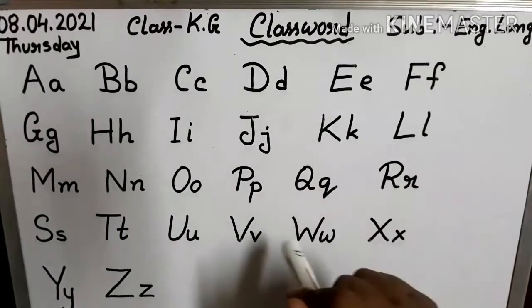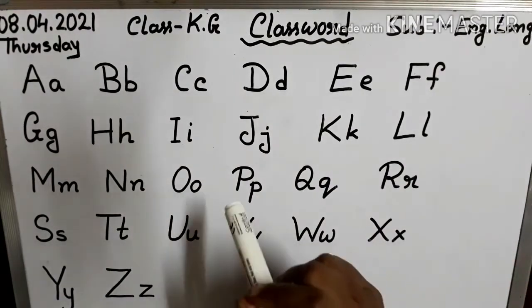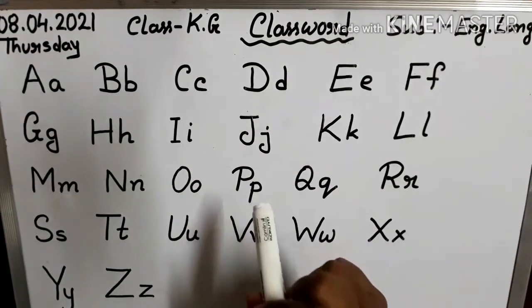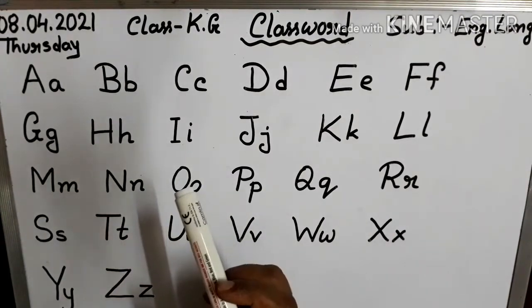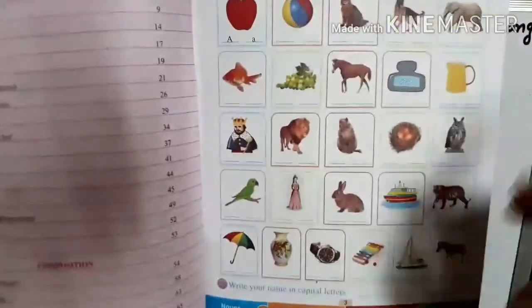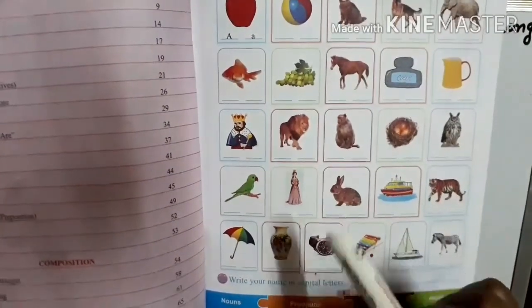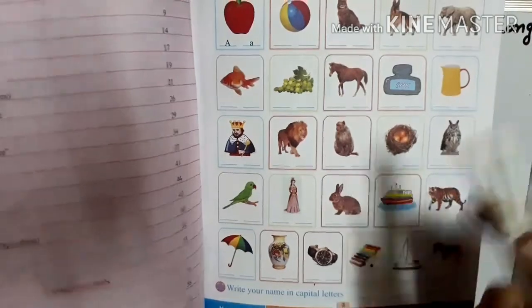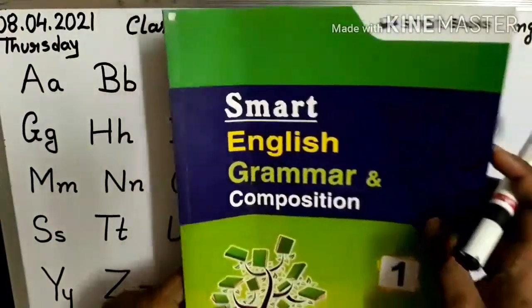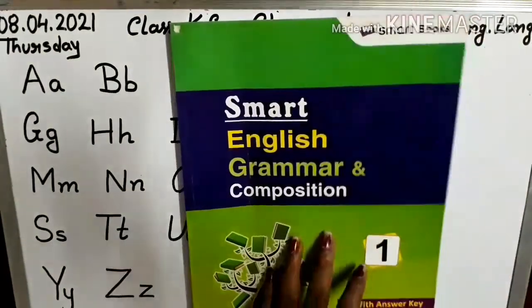So I hope that everyone understood. So children, practice very well capital letter and small letter and read it properly. Practice this page, page 3. Bye-bye.